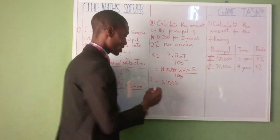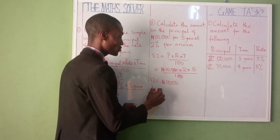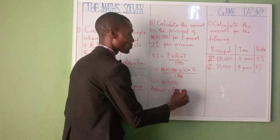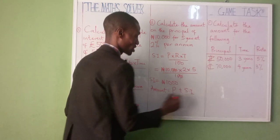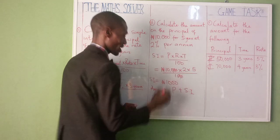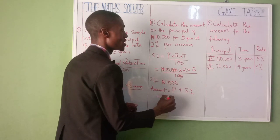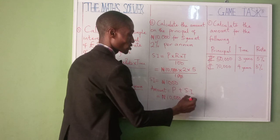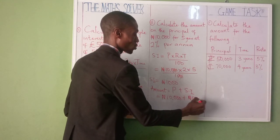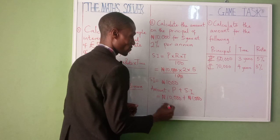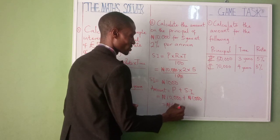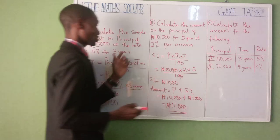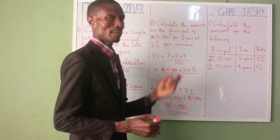Don't forget, we are looking for the amount. Amount means Principal plus Simple Interest. The principal here is 10,000, plus our simple interest of 1,000. So let's add them together — we have 11,000. It's as simple as that. This is simple interest; this is amount.